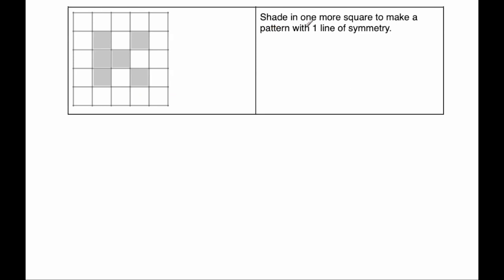Okay, our next question says, shade in one more square to make a pattern with one line of symmetry. Now we're not going to shade in this square here. If we shade in this square here, this shape would have two lines of symmetry. It would have a vertical one and a horizontal one.